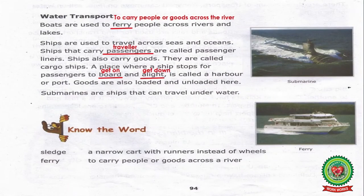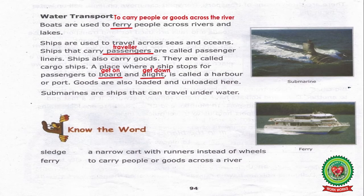Ships are used to travel across seas and oceans. Ships that carry passengers are called passenger liners. Underline the word 'passengers' and write down the meaning: travelers. Ships also carry goods — these are called cargo ships.